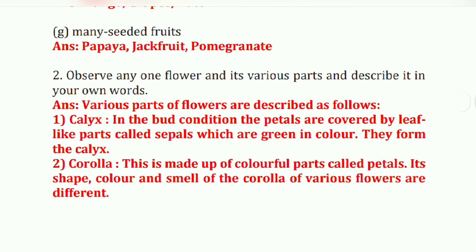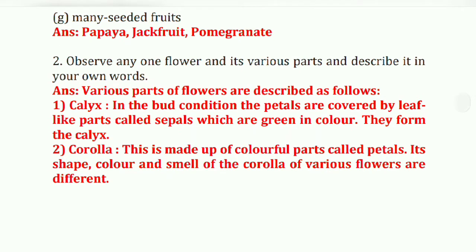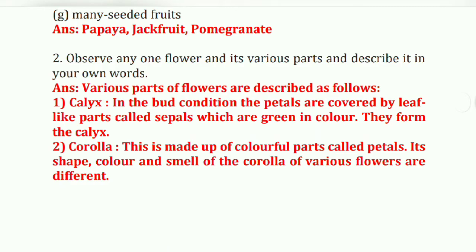Next question: observe any one flower and its various parts and describe it in your own words. Various parts of a flower are described as follows. First, calyx — in the bud condition, the petals are covered by leaf-like parts called sepals, which are green in color. They form the calyx.